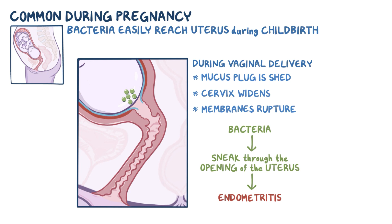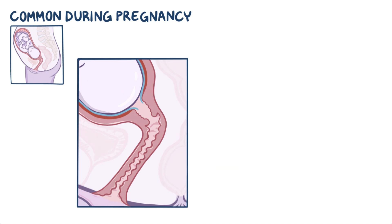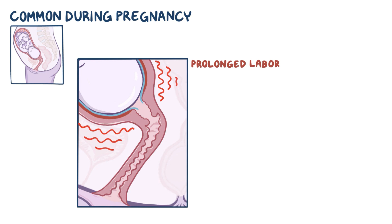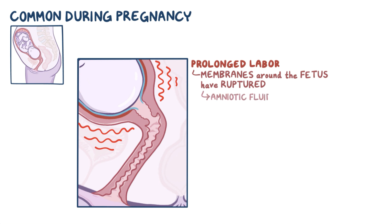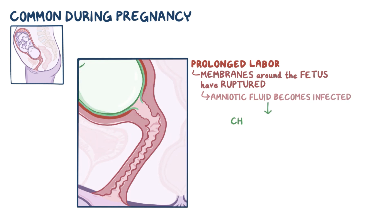To make matters worse, under certain conditions, bacteria can have even more time to reach the endometrium. This can occur when there's a prolonged labor and the premature rupture of the membranes, where the membranes around the fetus have ruptured before the onset of labor. In addition, if the amniotic fluid or the membranes around the fetus become infected, a condition known as chorioamnionitis, the infection can spread to the nearby endometrium, causing it to be infected as well.